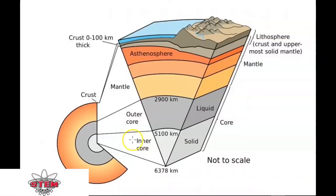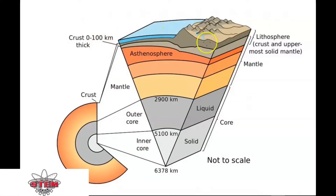First, let's start off by learning a little bit about the mantle, the crust, and convection currents. The Earth is composed of four different layers: the inner core, the outer core, the mantle, and the crust. The crust is the uppermost part of the Earth, and it is what we live on.